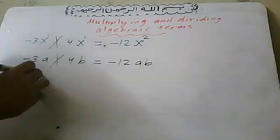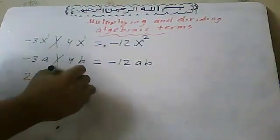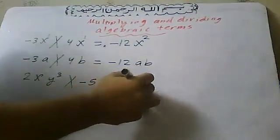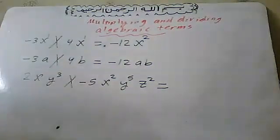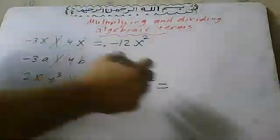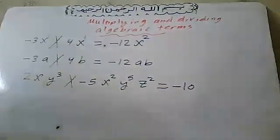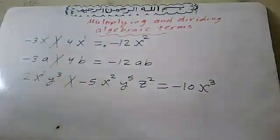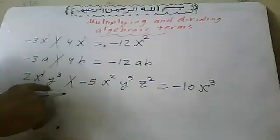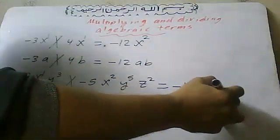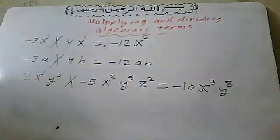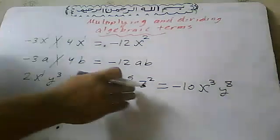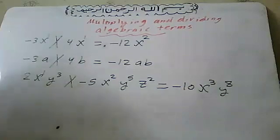So I'll give you 2xy³ times -5x²y⁵z². First I'll do 2 times -5, giving -10. Then x¹ and x² gives x³. Y³ and y⁵ gives y⁸. No, wait. I'm sorry, you won't get three kinds of z.